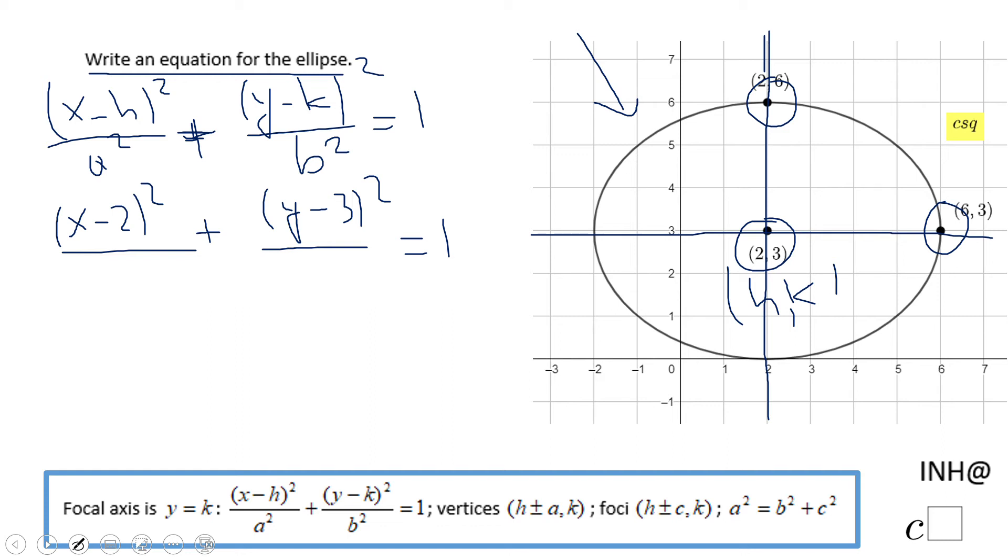a in our case is the length of this segment that starts here at two and three and ends up at six and three. This is a, which is one, two, three, four. So a is four, a squared will be sixteen.